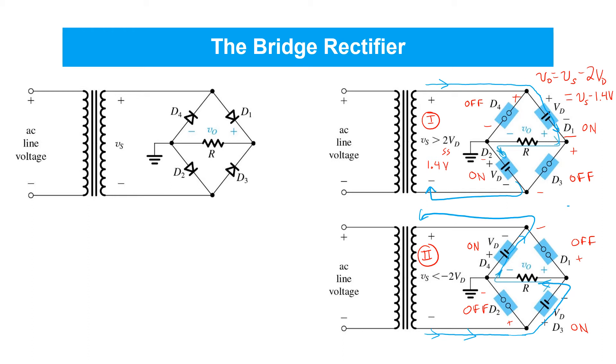Again, the polarity of the diodes is chosen cleverly so that in this case two, that is the negative half cycles of VS, current still flows in the same direction to the load resistor R and the polarity of VO is still positive.